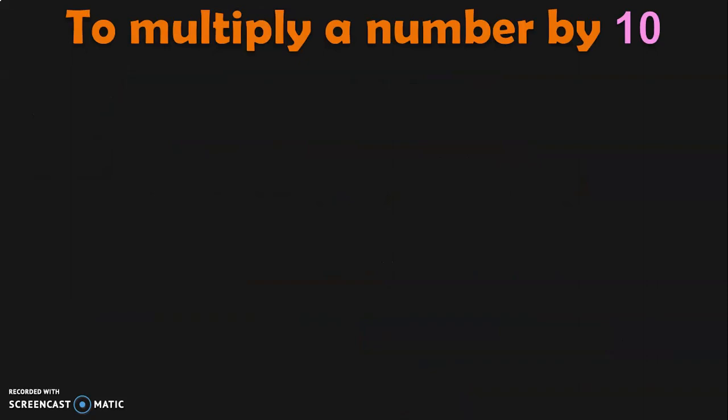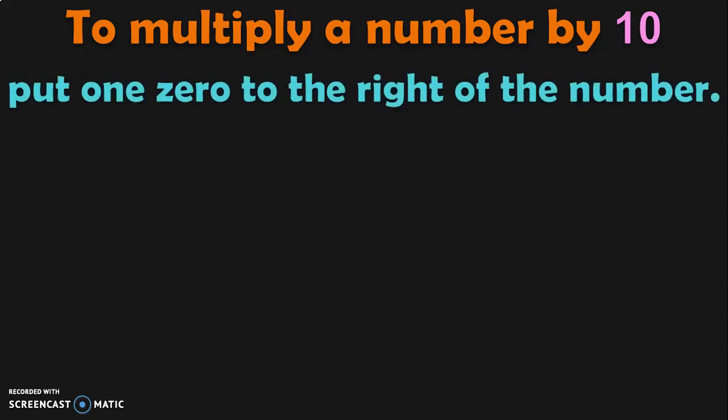First, to multiply a number by 10, what will we do? Put one zero to the right of the number. Let us understand this with the help of examples.